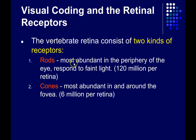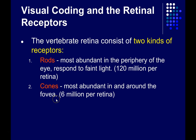The rods are most abundant in the periphery of the retina, and they respond better than the cones in low-light conditions. The cones, on the other hand, are most abundant in and around the fovea, the center of your field of view, the area with the highest acuity, and you've got about six million of these per retina.